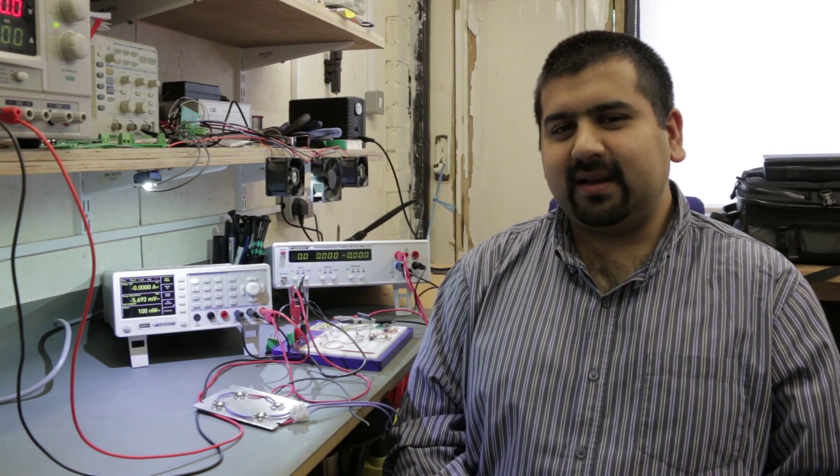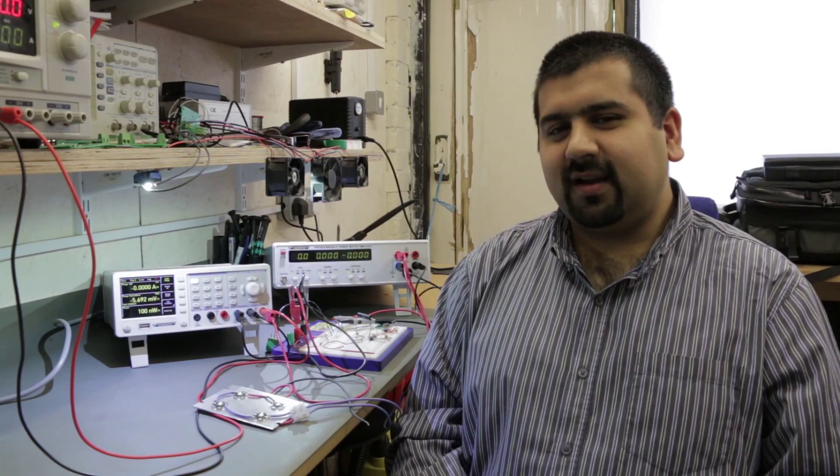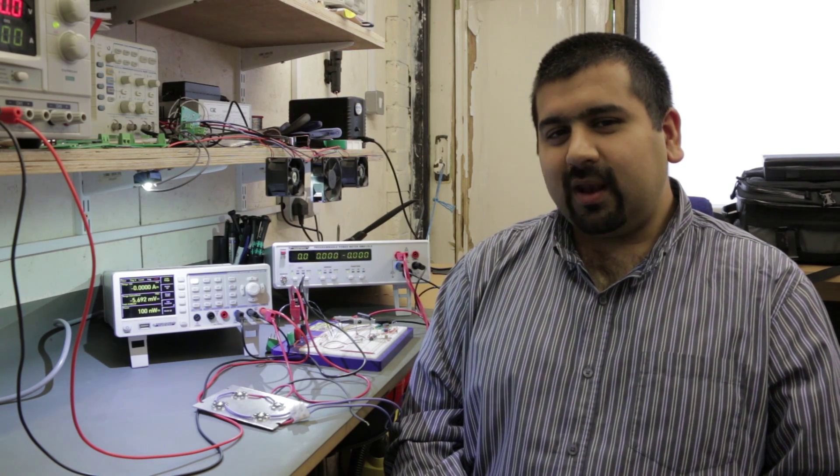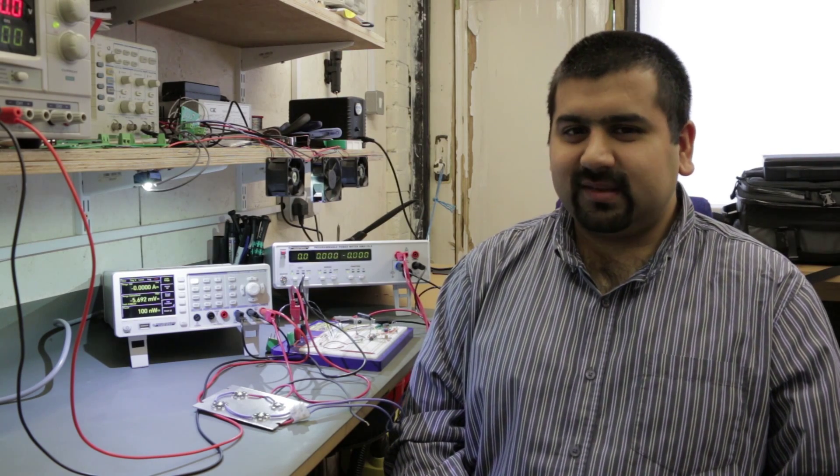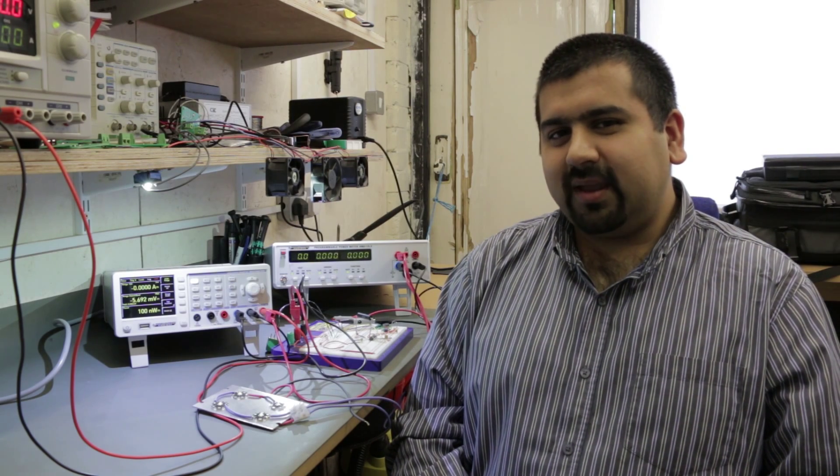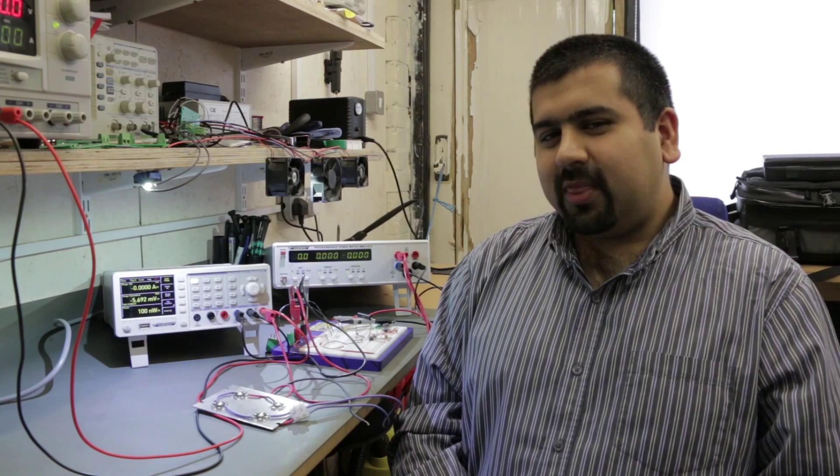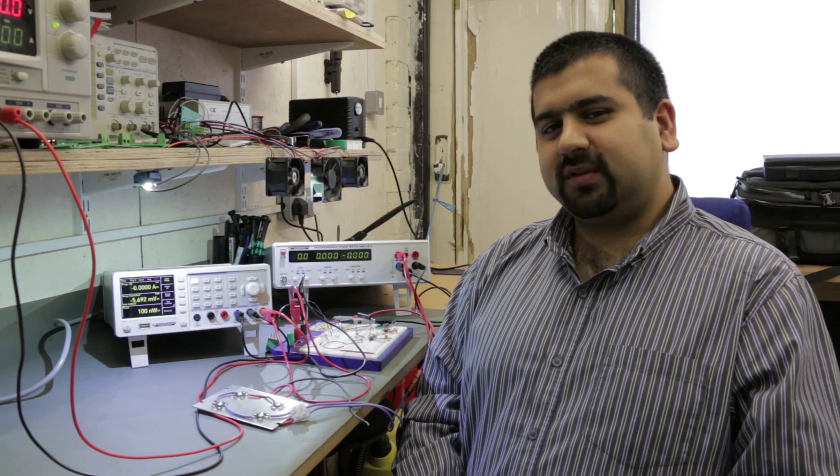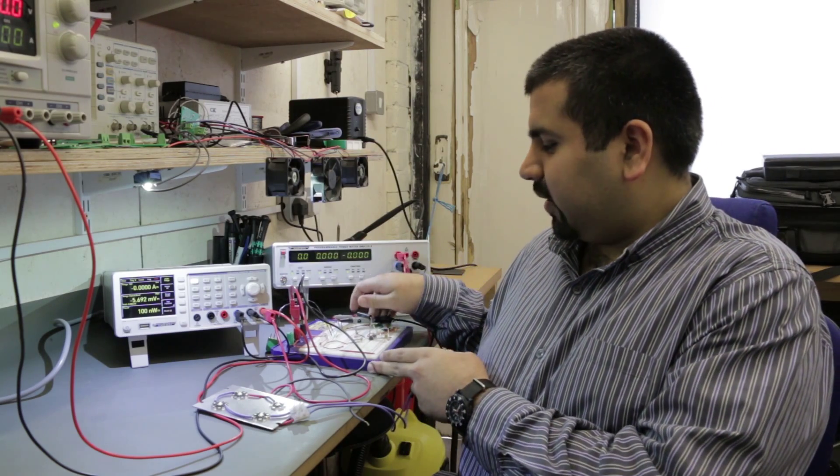In the first video we talked about selecting components. We also discussed the IC that we wanted to use. Now we've chosen the Texas Instruments LM3409. The reason we chose that is because it comes in a DIP package. We did that so that we could use it to prototype on a solderless breadboard like this one over here.